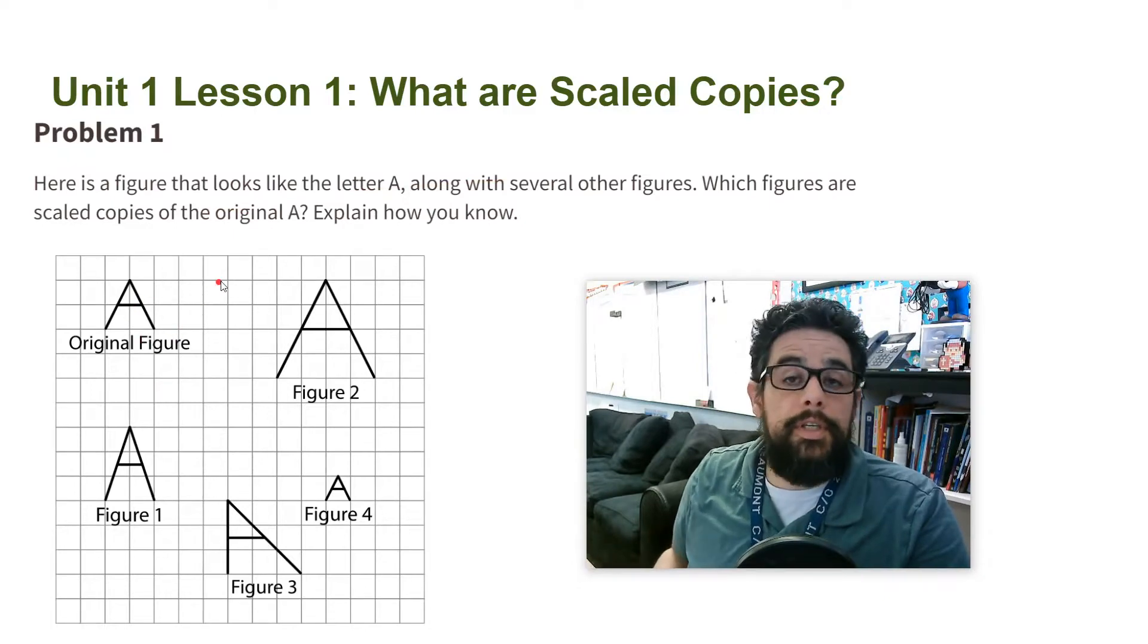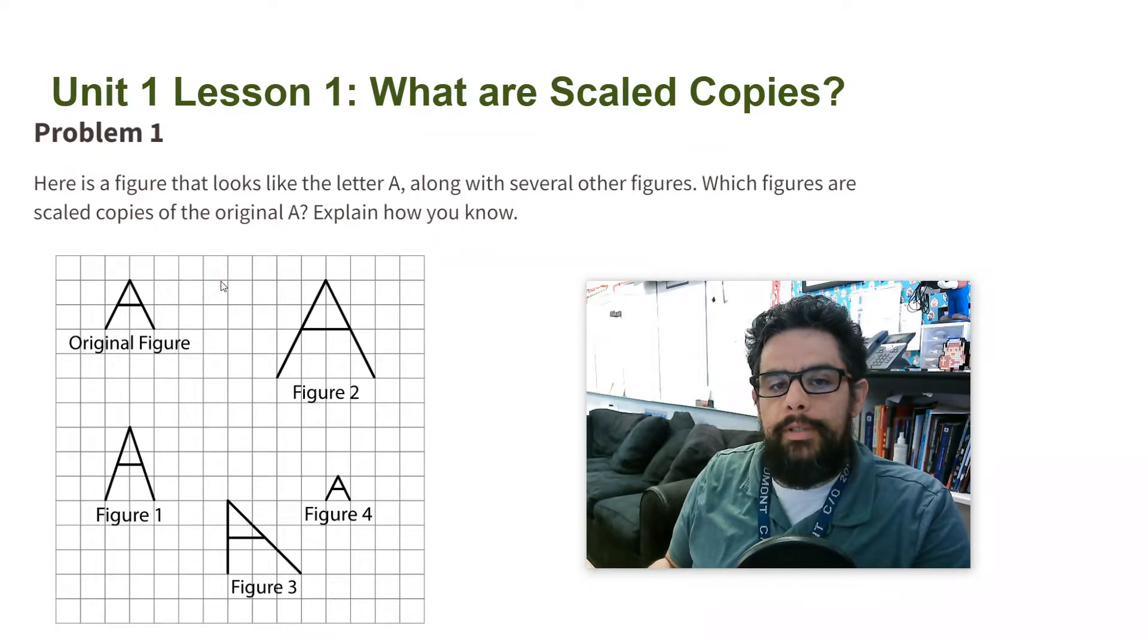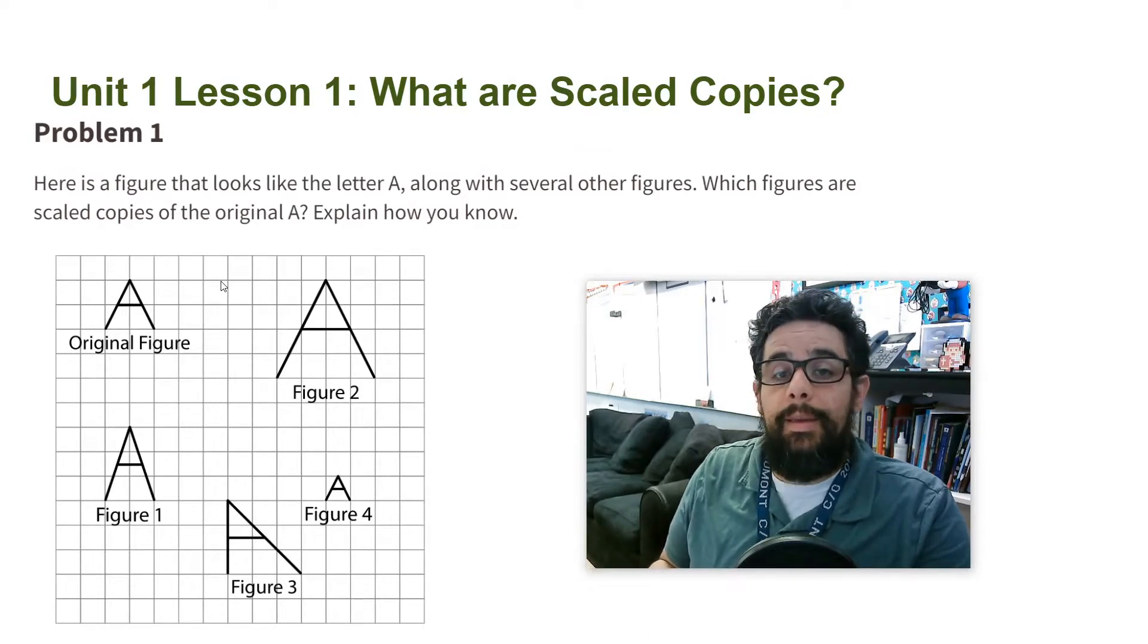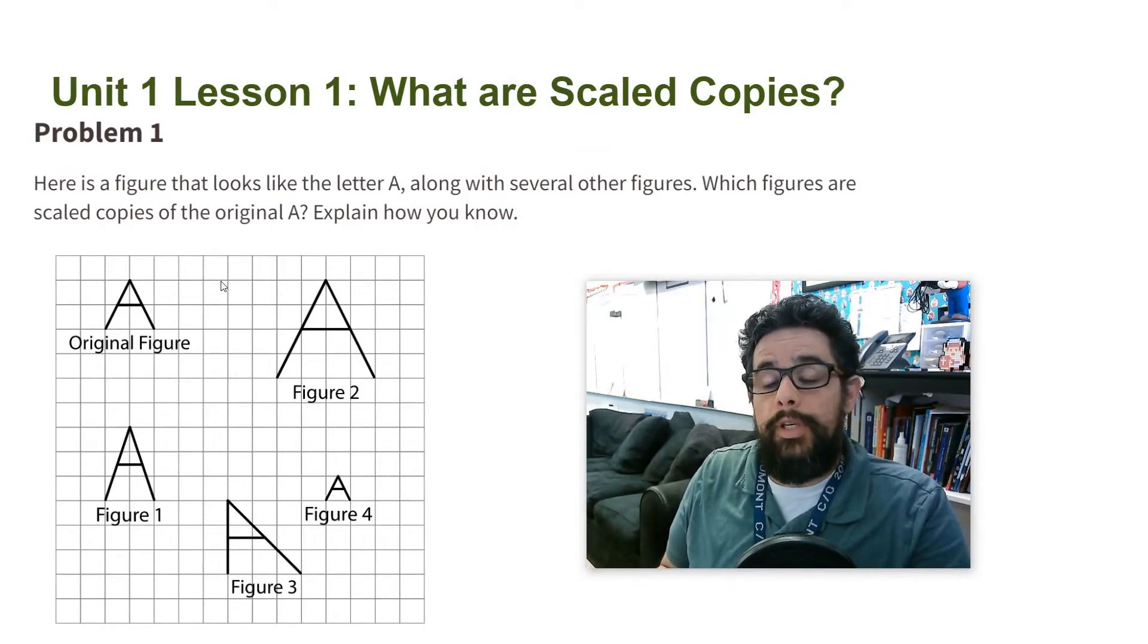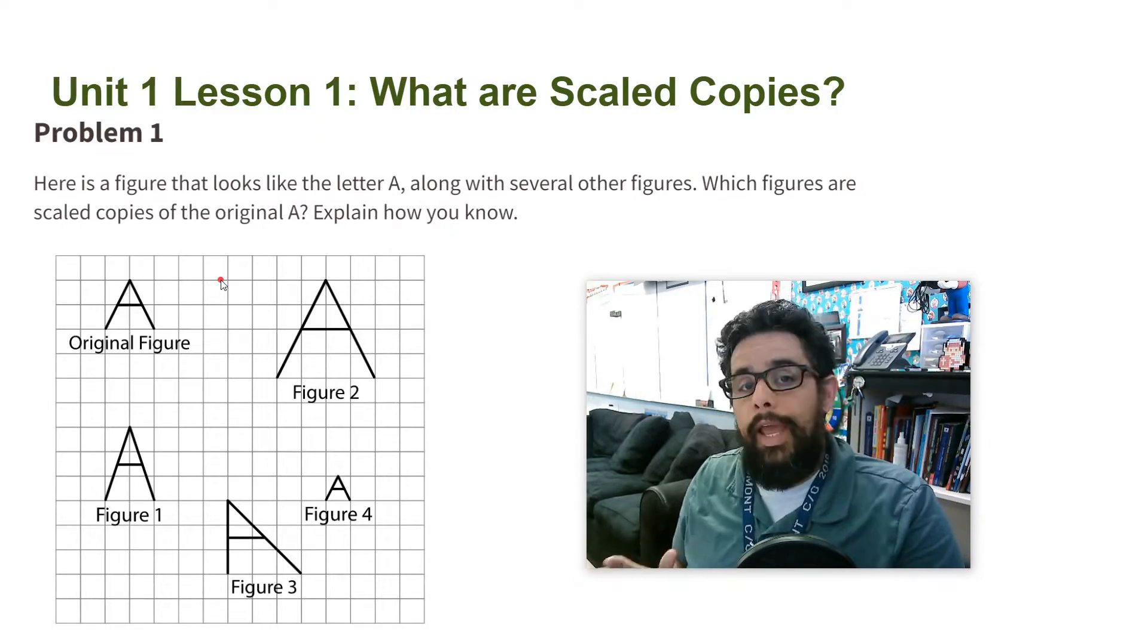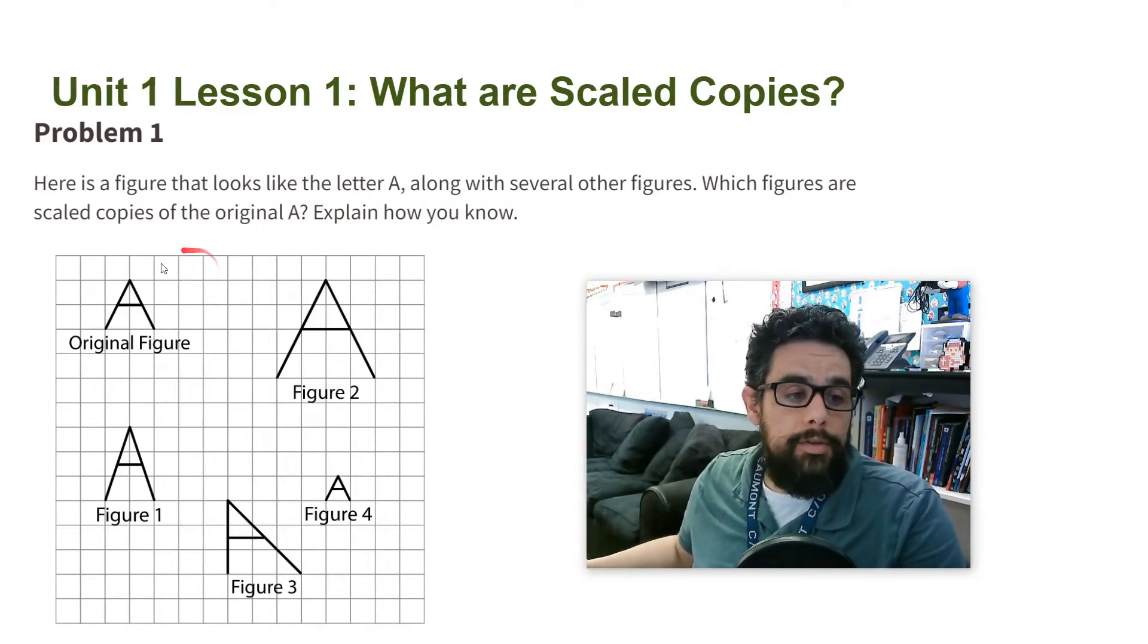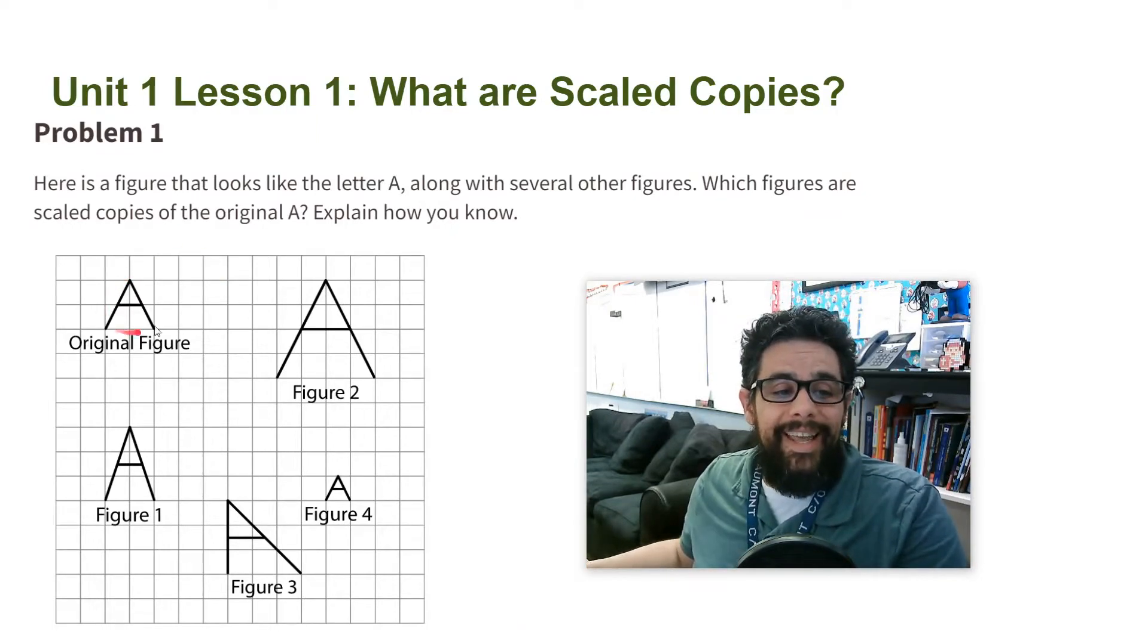we're going to look at the other ones and see if it's a scaled copy. Remember what we learned today about scaled copies: scaled copies are figures that are either bigger or smaller. You multiply all the sides by the same factor and they have certain properties that we saw today in today's lesson and in the lesson summary. Okay, so if you look here at the original one, it is a letter A and it fits inside a square, a two by two square. So now let's look at the other figures.